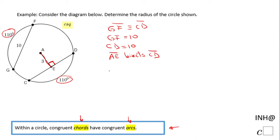This means CE is congruent to ED. Since CD is 10, we can find CE or ED. They are going to be half of CD.